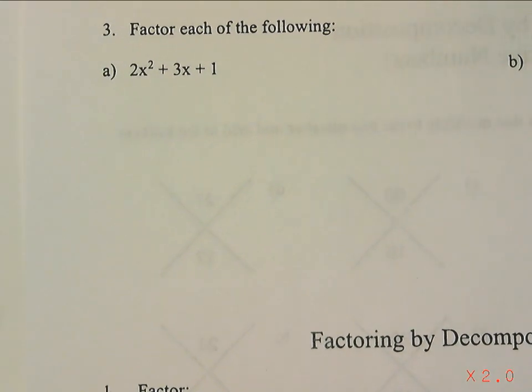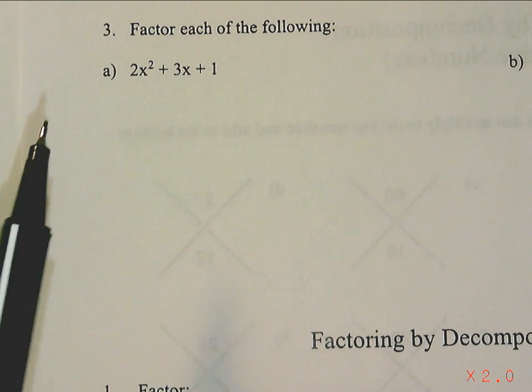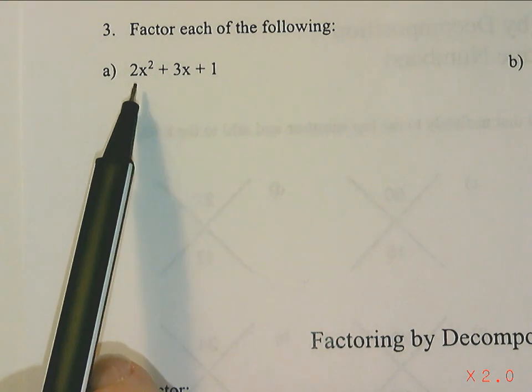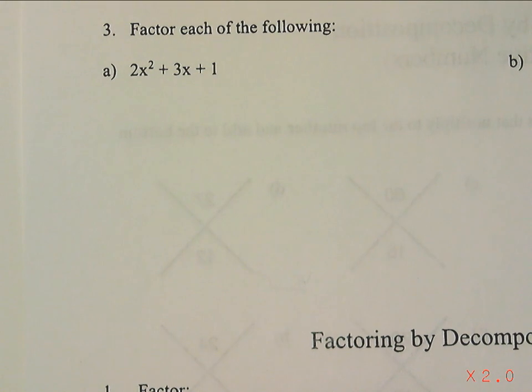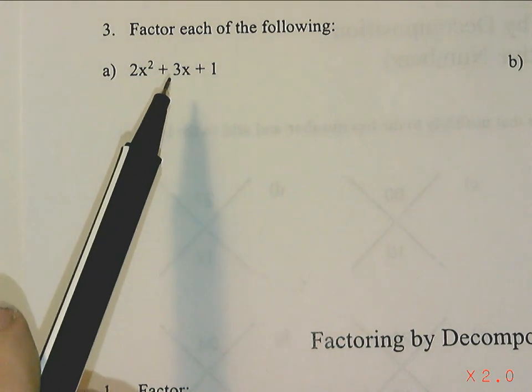There we go. When we're trying to factor something by decomposition, we usually do that if we have an x² term, an x term, and a number. It's also called a trinomial because it has three terms.